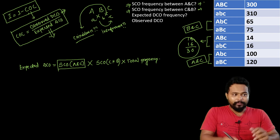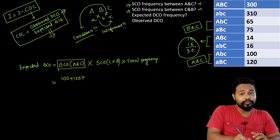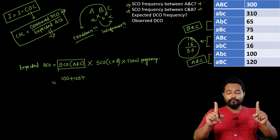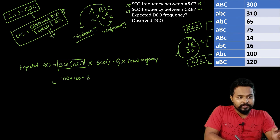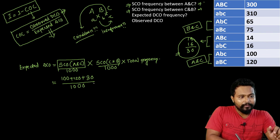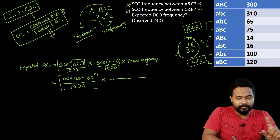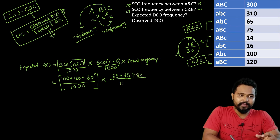The single crossover frequency between A and C, calculated from the last class, includes the relevant crossover classes plus the double crossovers — for example, a large number plus 120, plus double crossover of 30, divided by 1000. Similarly, the single crossover frequency between C and B uses classes 65 plus 75 plus double crossovers.